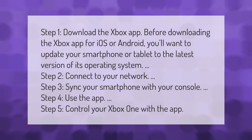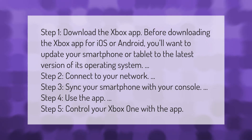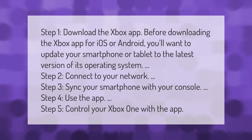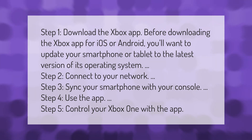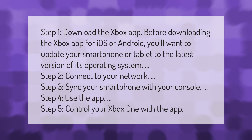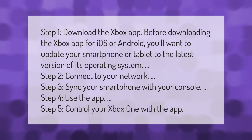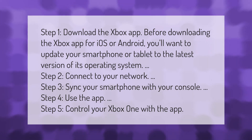Step one: Download the Xbox app. Before downloading the Xbox app for iOS or Android, update your smartphone or tablet to the latest version of its operating system. Step two: Connect to your network. Step three: Sync your smartphone with your console. Step four: Use the app. Step five: Control your Xbox One with the app.